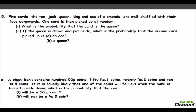The fifth problem: five cards — 10, Jack, Queen, King, and Ace of diamonds — are well shuffled face downwards. One card is picked at random. What is the probability that the card is a Queen? The total number of cards is 5 and there is only one Queen among them. So the probability of picking a Queen is 1 over 5.